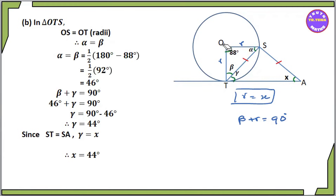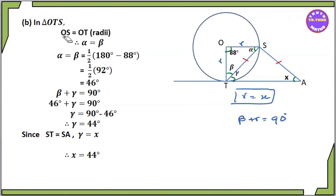R O T is equal to O S — radii. And we call it radii. So we call it a triangle. Alpha and beta.